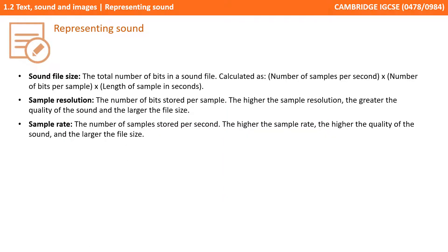Sound file size is the total number of bits in a sound, calculated as the number of samples per second, times by the number of bits per sample, times by the length of the sample in seconds. Sample resolution refers to the number of bits stored with each sample — the higher the number of bits, the greater the quality of the sound but the larger the file size. The sample rate is the number of samples recorded per second, measured in hertz; again, the higher the number of samples per second, the higher the quality, but the larger the overall file size.